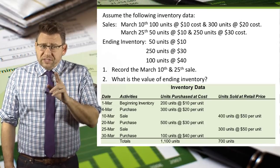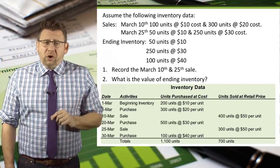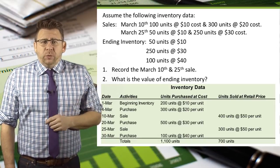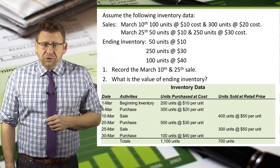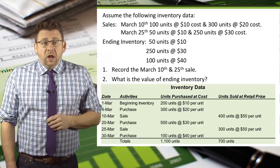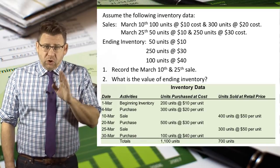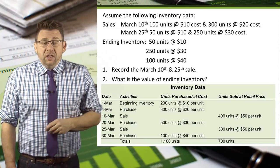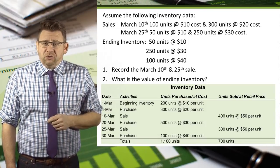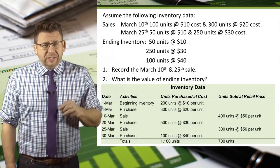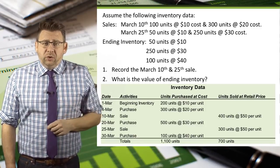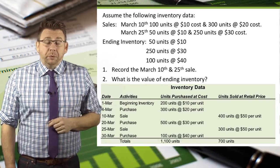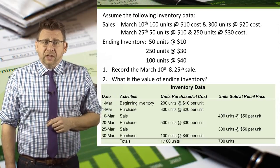We will use this information when we record the March 10th sale in the journal. March 20th we purchased an additional 500 units at $30 each. March 25th we sold 300 units at a price of $50 each. The cost of the units sold on March 25th were 50 units at $10 and 250 units at $30 each. We will use this information when we record the March 25th sale in the journal.